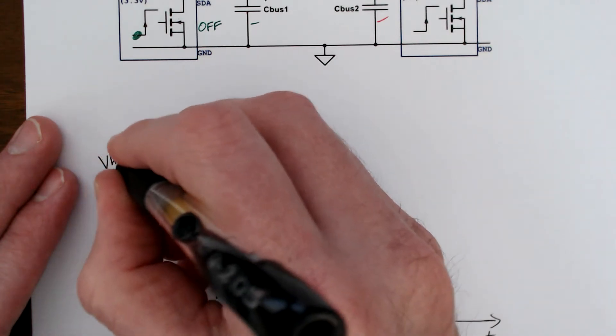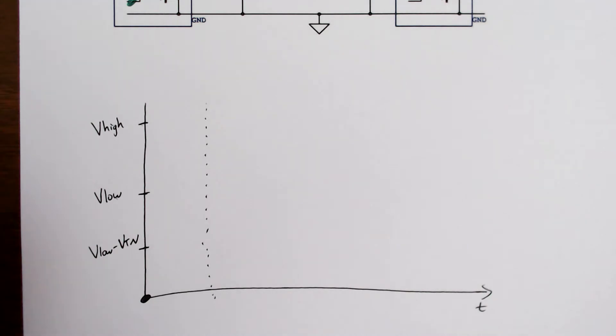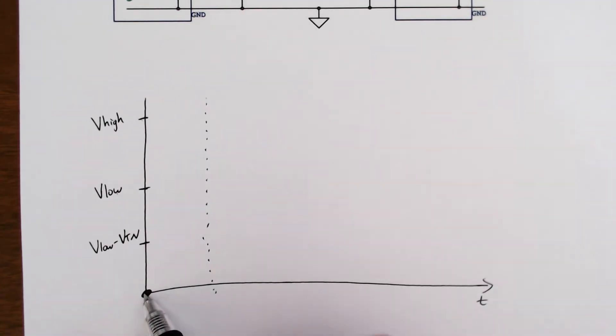And then we have V high way up here. So that's our setup. At time equals zero, our voltage across the capacitor starts at zero.